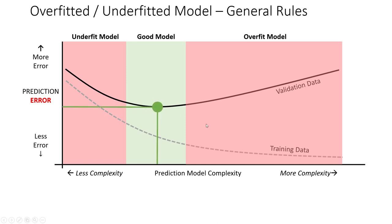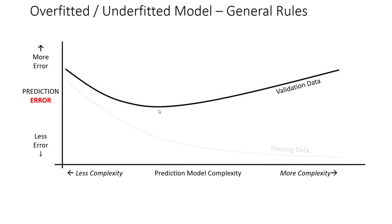The middle spot near the bottom of the U-shape is the good model zone, and the lowest point in the validation data set — where error is lowest and overall prediction is highest — would be the ideal model. Now remember we have one other data file we haven't used yet: the scoring data file. If we plotted the scoring data file onto this same chart, what would we expect the results to look like?